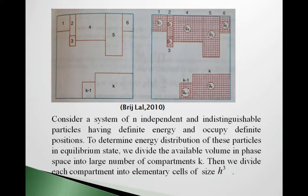Then we divide each compartment into elementary cells. This volume in phase space is divided first into K compartments — 1, 2, ..., K−1 — and again each compartment is divided into a number of elementary cells of size h³.